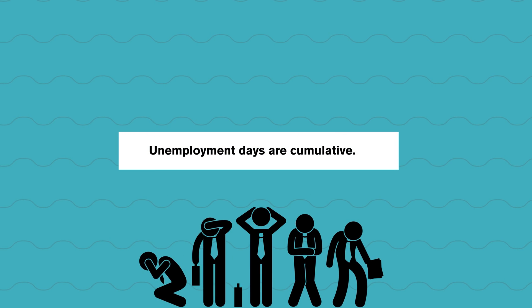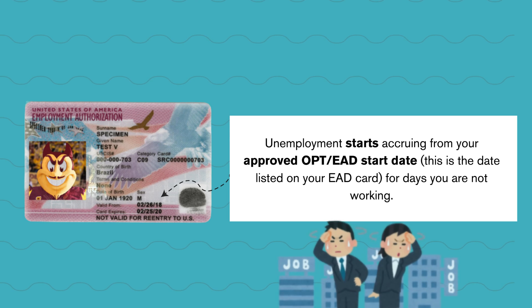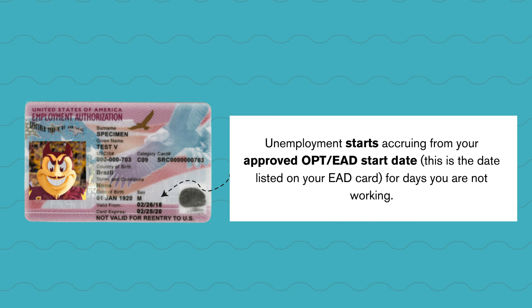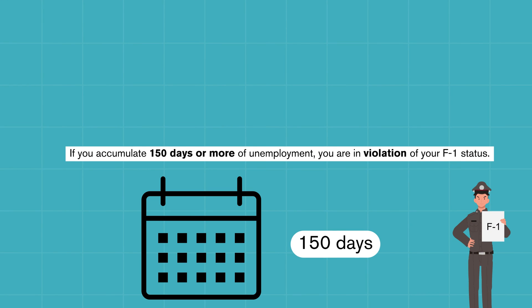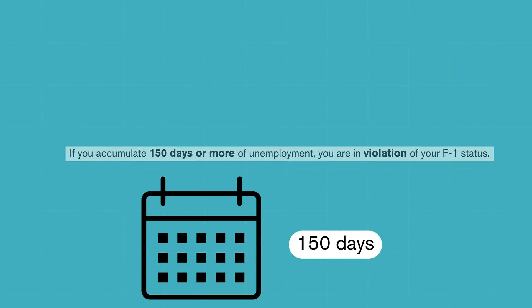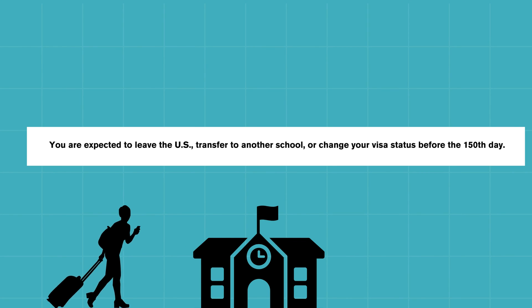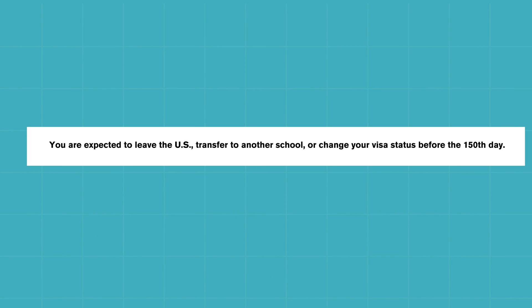Unemployment days are cumulative. Unemployment starts occurring from your approved OPT EAD start date — this is the date listed on your EAD card — for days you are not working. If you accumulate 150 days or more of unemployment, you are in violation of your F-1 status. You are expected to leave the U.S., transfer to another school, or change your visa status before reaching 150 days.